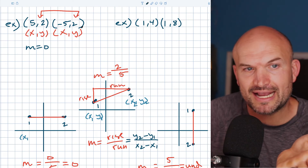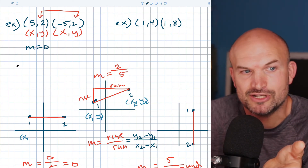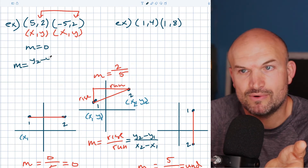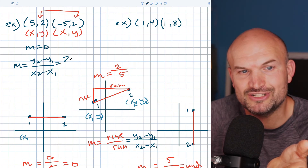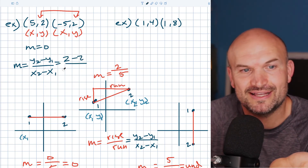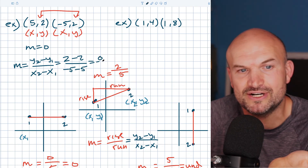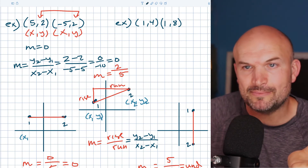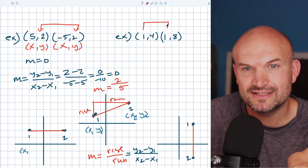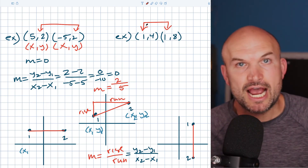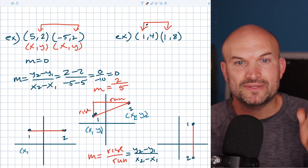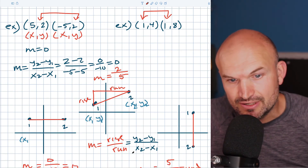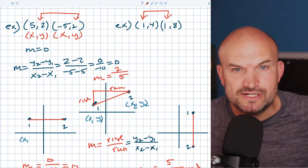In the horizontal example, since the Y values are the same, I have Y2 minus Y1 over X2 minus X1 — that's two minus two in the numerator, which is zero. The denominator is negative five minus five, which is negative ten. So zero over negative ten equals zero. In the vertical example, notice the X coordinates are exactly the same. Whenever you're finding the slope and the X coordinates are exactly the same, the slope is undefined because there's no change horizontally — the change in X is zero in the denominator, and you can't divide by zero. It's going to be an undefined slope.